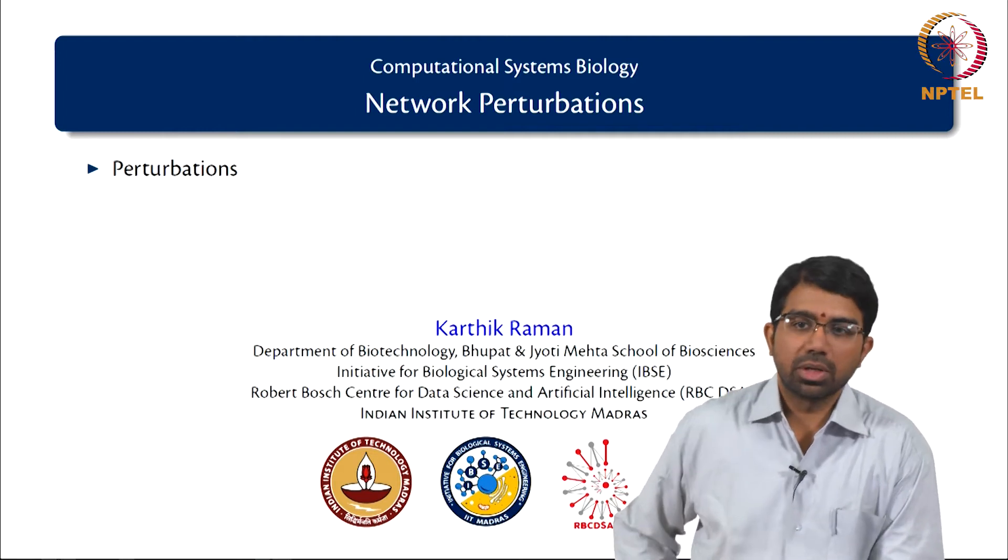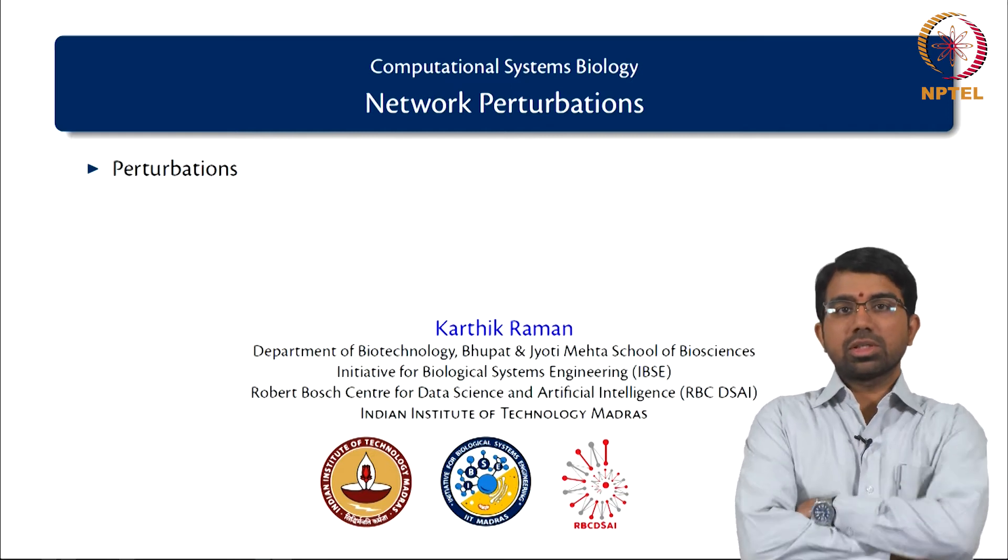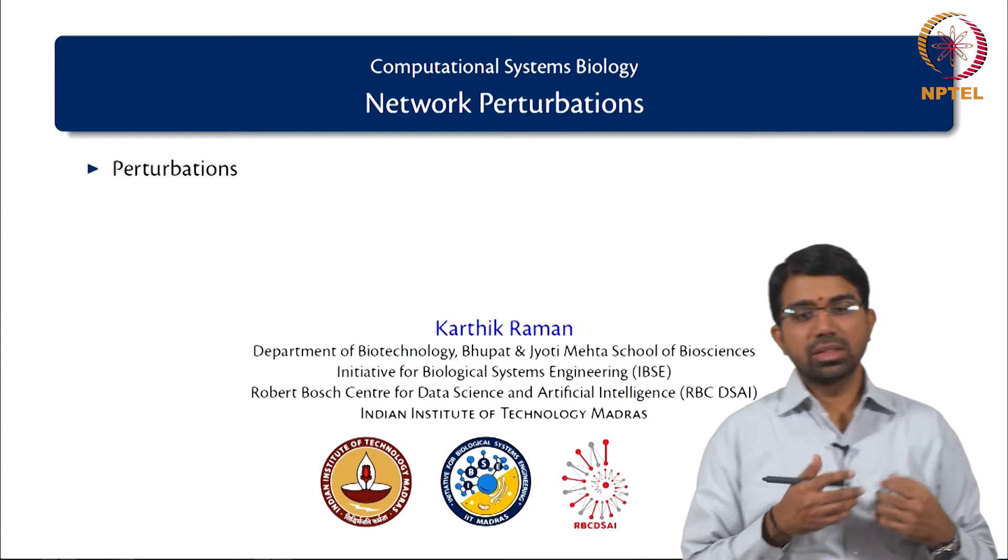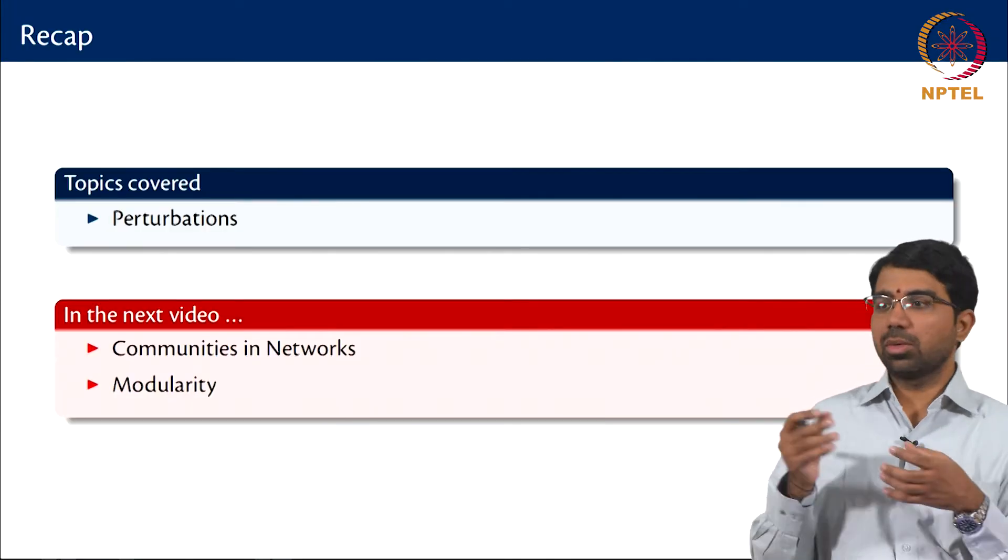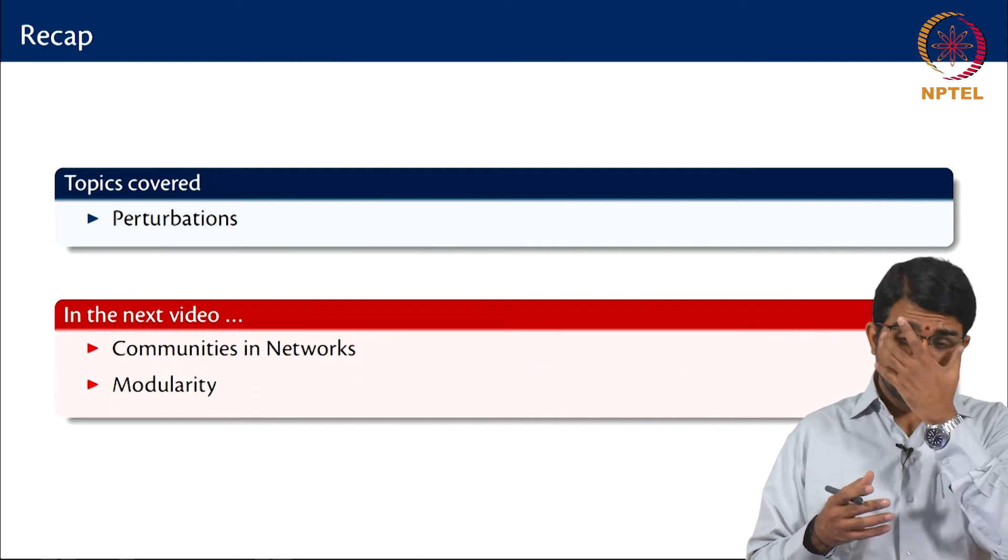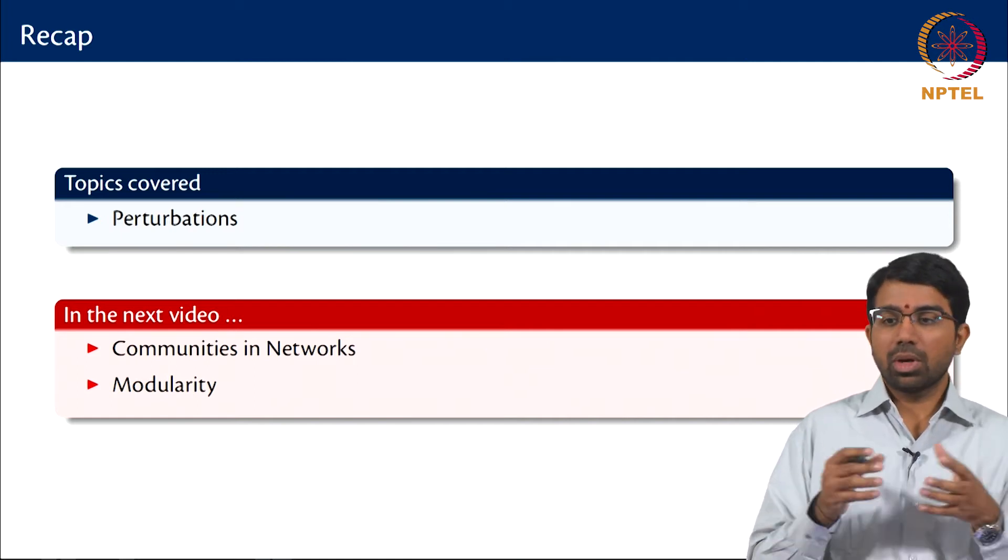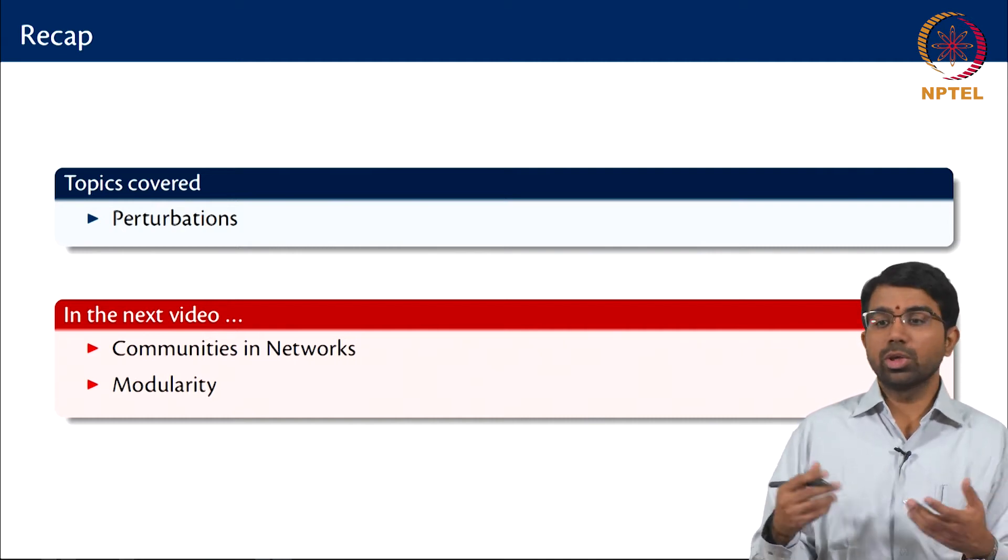So first we will look at perturbations. How do you perturb a network? As we discussed earlier, perturbation is one of the most important themes in systems biology, in biology in general. You try to knock out a gene and see what happens, you knock out a bunch of proteins and see what happens. Similarly, here we would like to see what happens when you perturb a particular biological network.